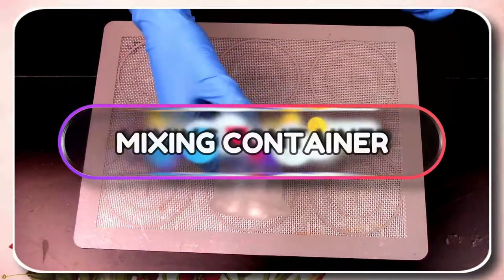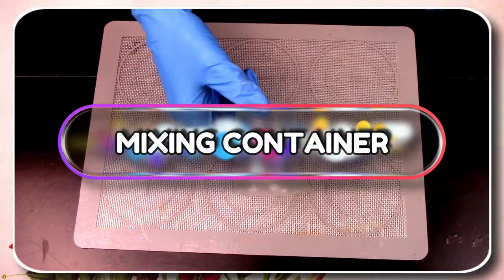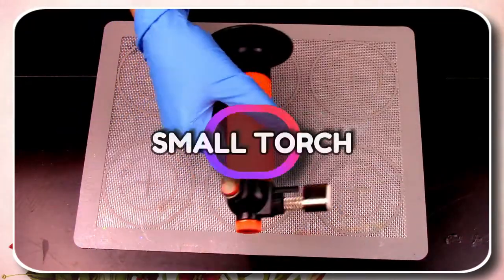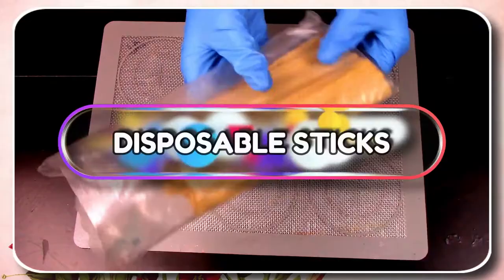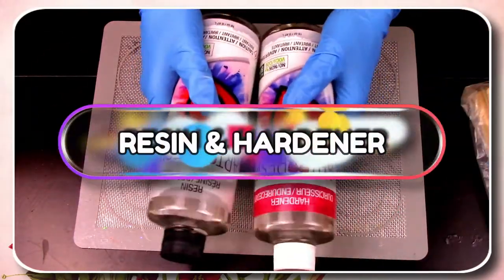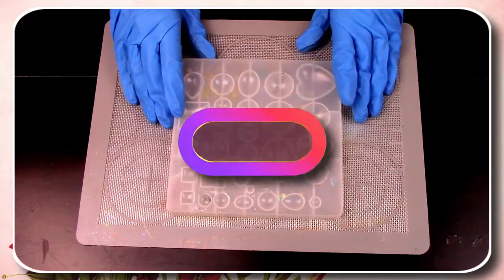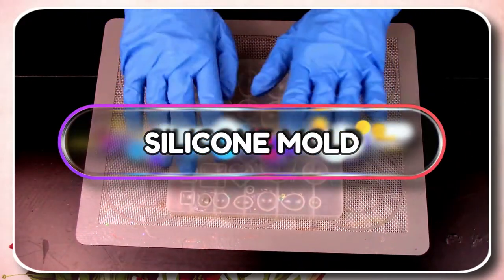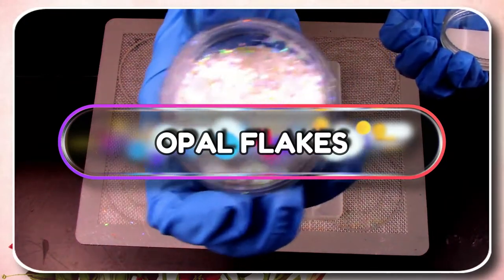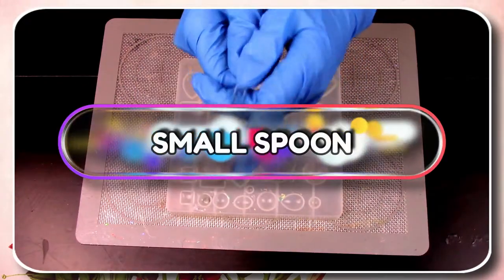Get yourself a mixing container with measures on the side, keep your hands protected with some disposable gloves, a small torch for those bubbles, disposable stir sticks, the resin and hardener, your silicone mold, my favorite opal flakes, and last but not least a little smoother.